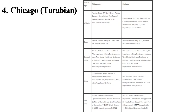Chicago method: notes and bibliography. The notes and bibliography method is mostly used by students in arts, literature, and history. It contains footnotes/endnotes and a bibliography. In-text citations do not name the author or work, but use the superscript function to denote them. The footnotes are located at the end of each page in which the referenced content is cited, while the bibliography lists all the sources at the end of the paper.